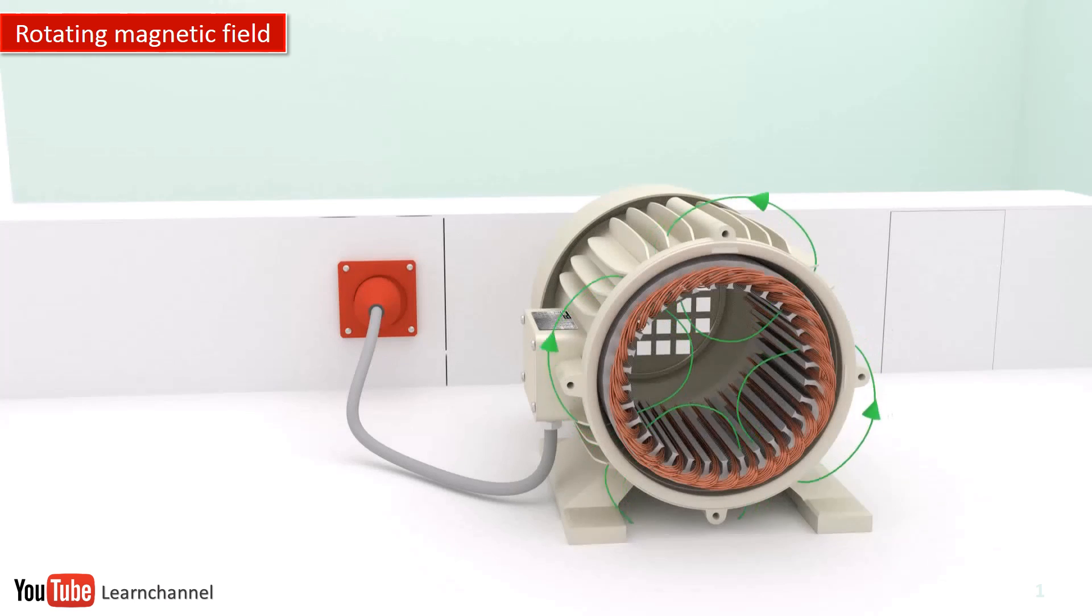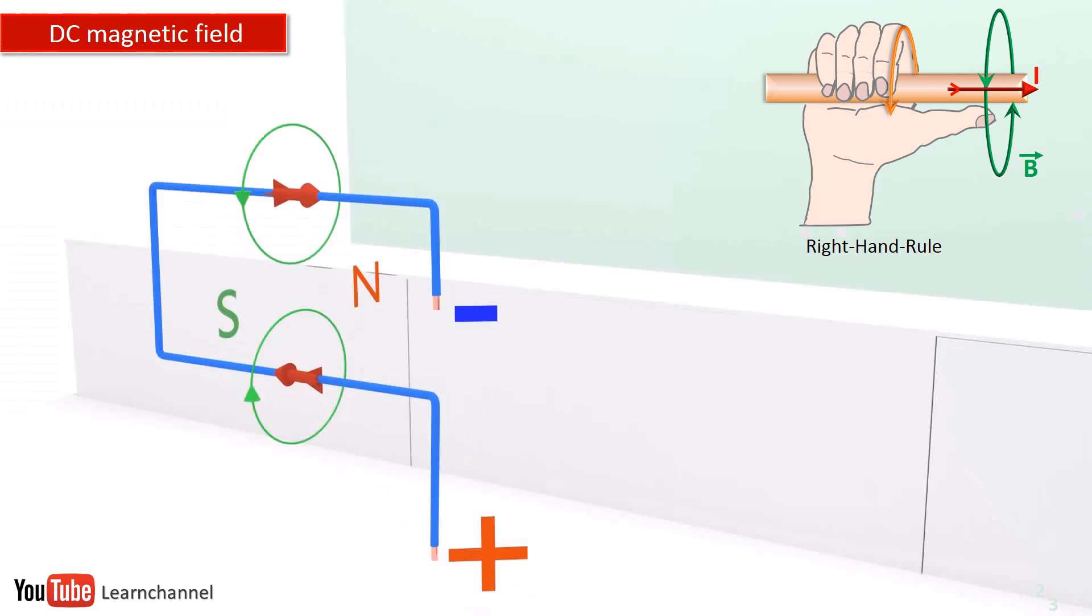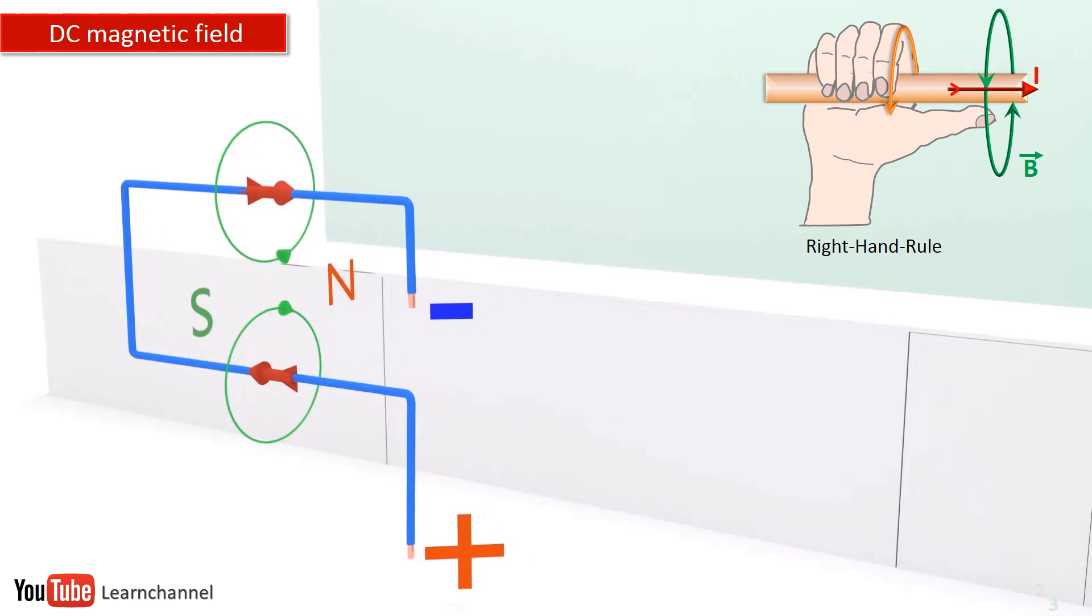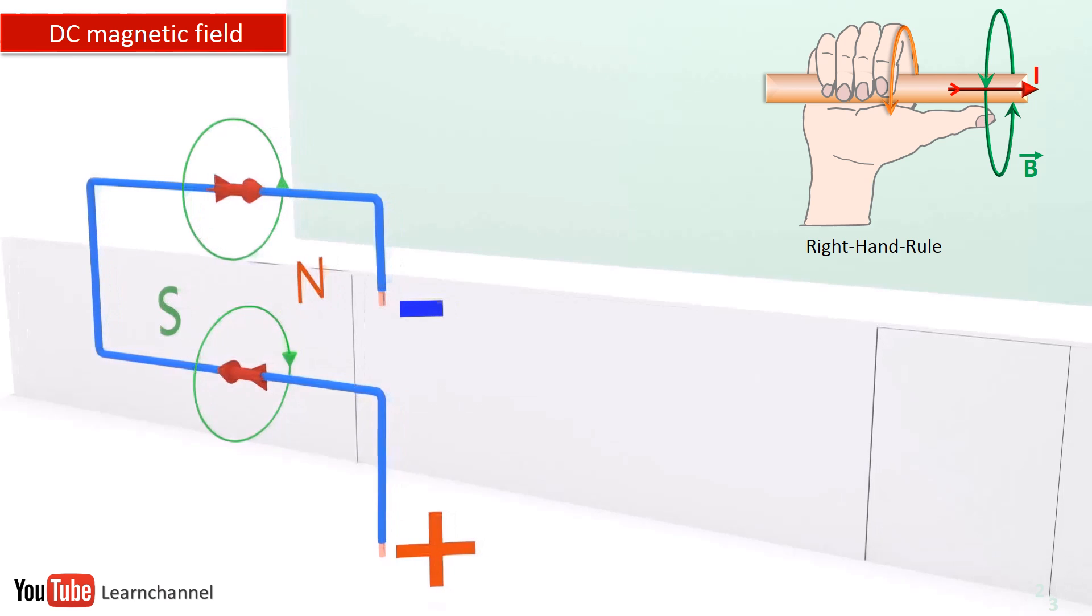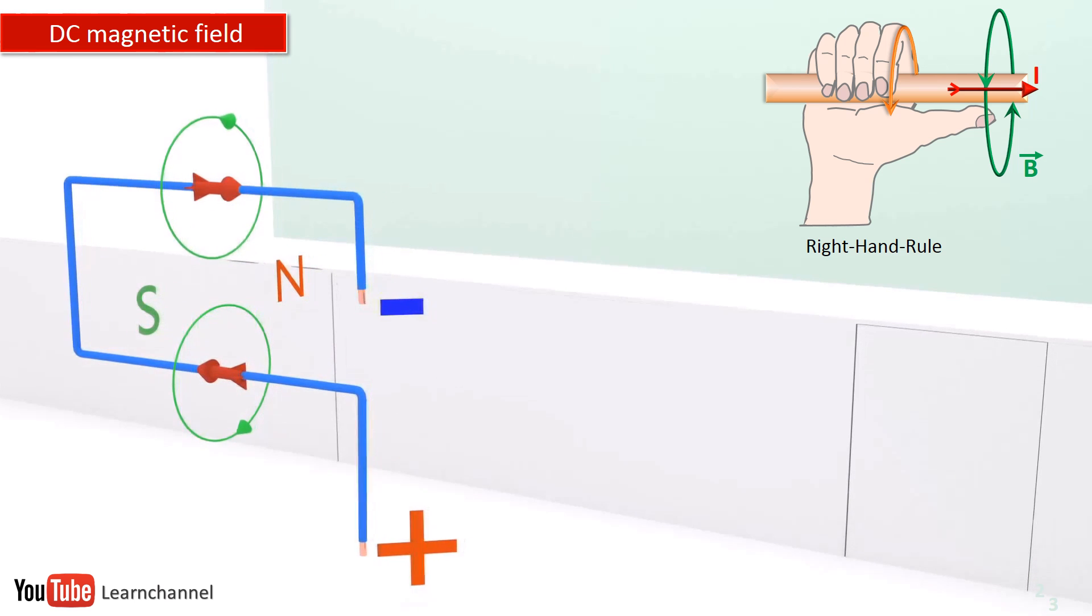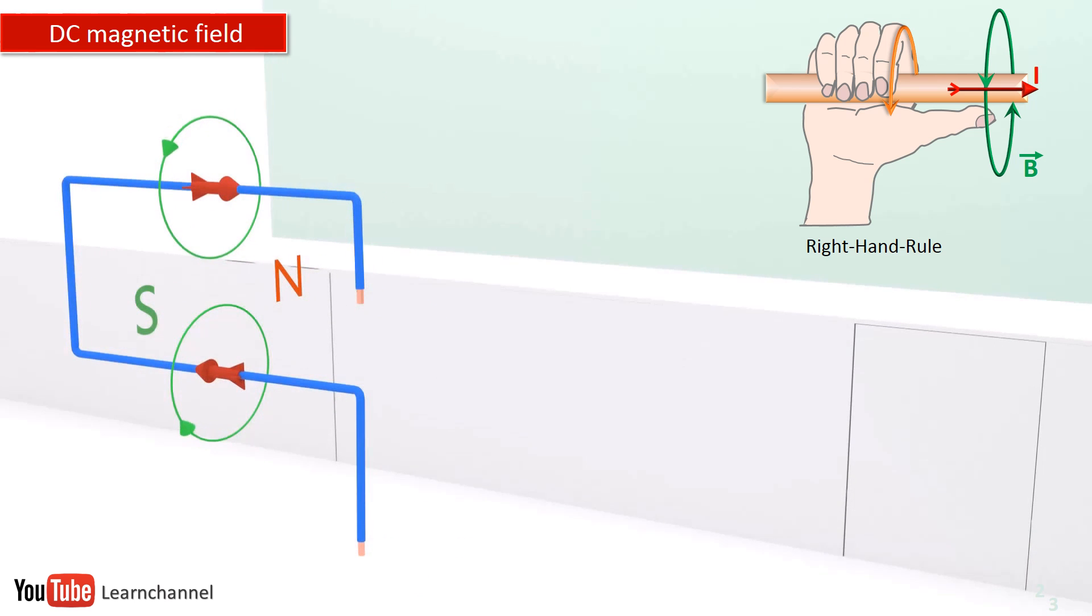It is all because of the rotating magnetic field generated by the motor winding. To understand RMF, have a look at this single wire connected to DC. The concentric magnetic field can be determined by the right-hand rule as shown.